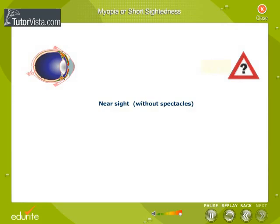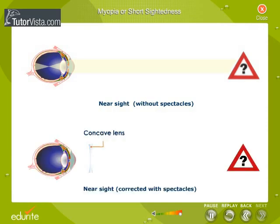In the first diagram, a person with a myopic eye defect sees a blurred image of a distant object. The defect can be corrected by using spectacles having a concave lens of suitable focal length to get a clear image, as seen in the second diagram.